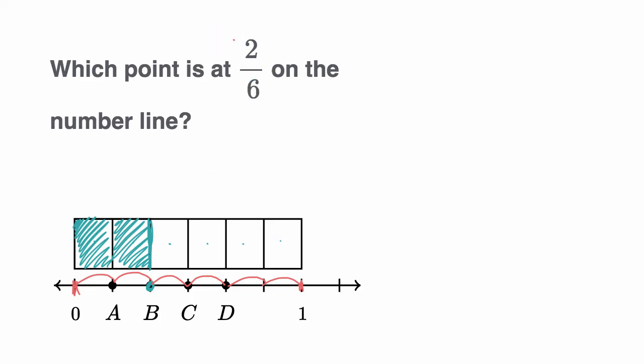And we want to go to two-sixths. So each of those equal sections, we are increasing by a sixth. So we're going from zero to one-sixth to two-sixths. Once again, we end up at point B.